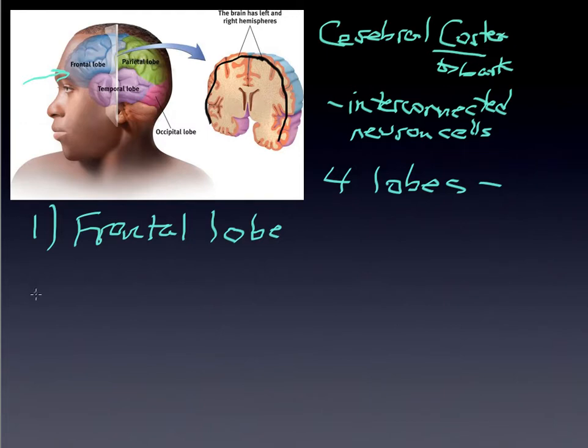The parietal lobe runs along the top of our head and contains a variety of interconnections which we'll look at when we talk about the motor cortex and the sensory cortex.